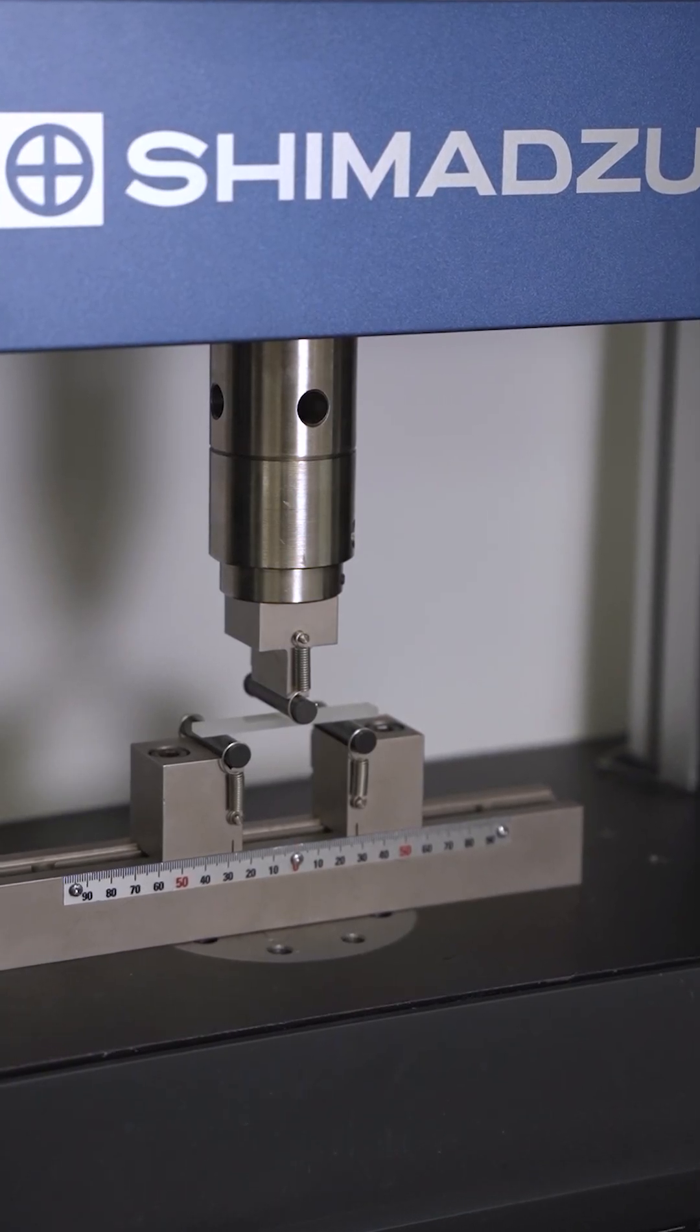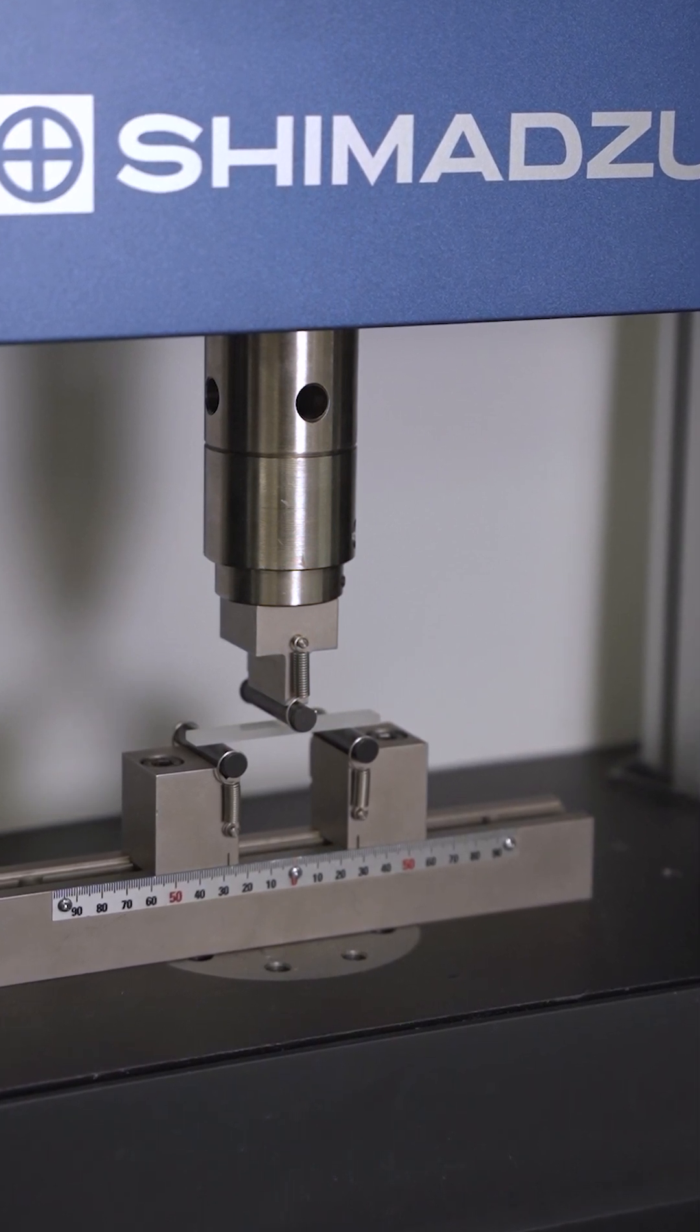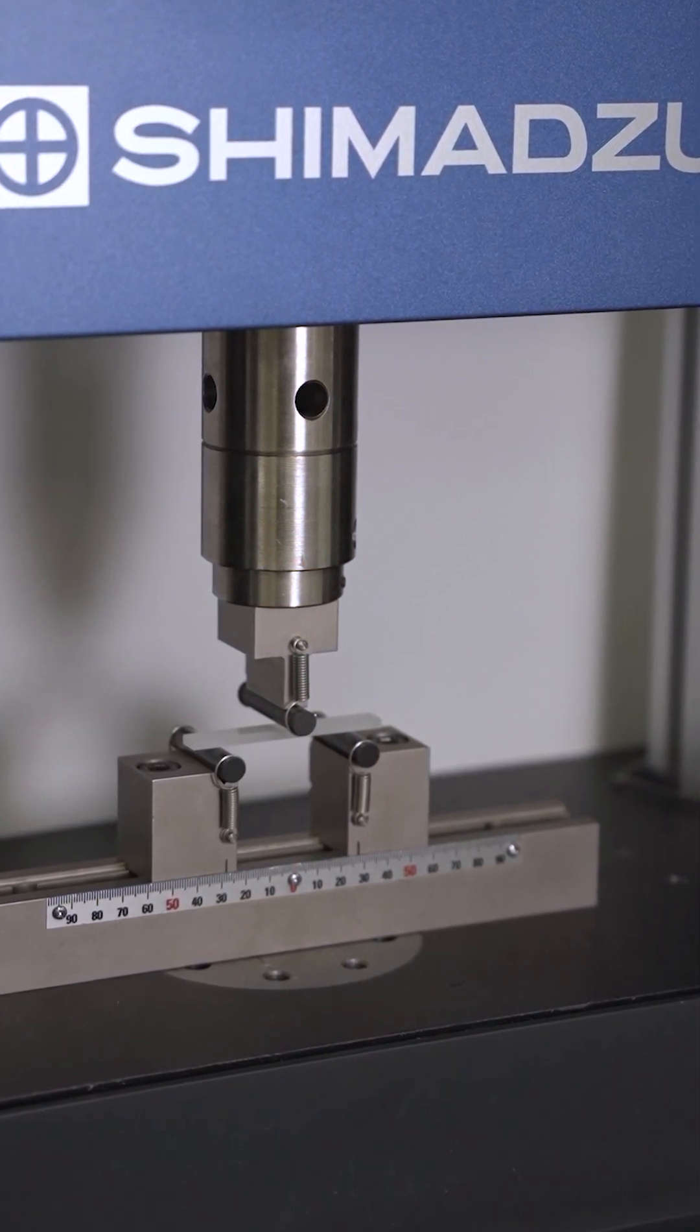ASTM D790 is a testing standard to determine the flexural properties of plastic materials, such as flexural stress, strain, yield point, and modulus.